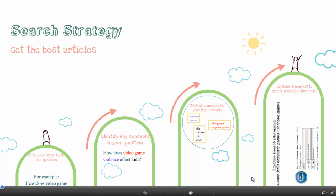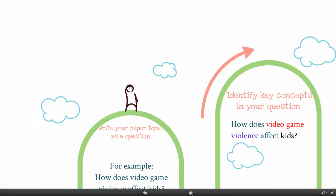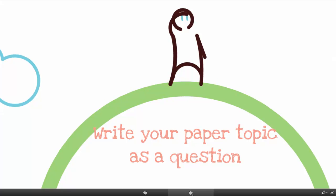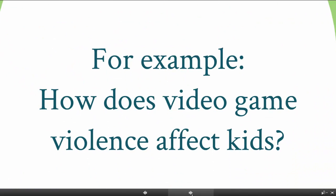Here's a search strategy to get the best articles from the online databases. First, write your paper topic as a question. So maybe you're interested in learning more about video game violence and children. If that's your topic, you could turn it into a question by saying: How does video game violence affect kids?